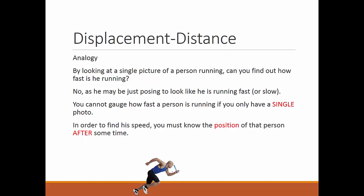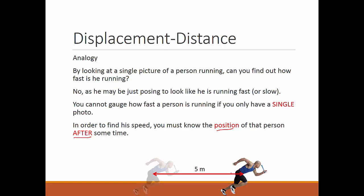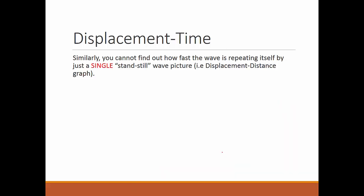The idea is that you cannot gauge how fast a person is running if you have only a single photo. In order to find his speed, you must know the position of that person after some time — maybe after 2 seconds he is over here. If he has moved 5 meters over 2 seconds, his speed can be calculated as 2.5 meters per second.